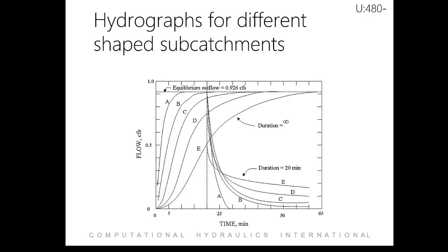For case E, the outflow is constricted. Hence, the same amount of inflow or rainfall is stored and less is released. For case A, water is released rapidly and little is stored. Thus, case A has both the fastest rising and recession limbs.